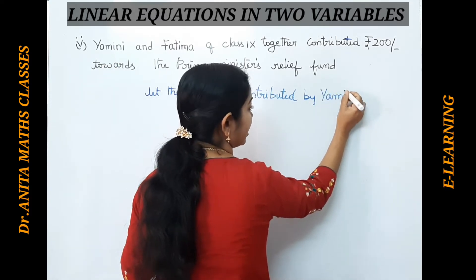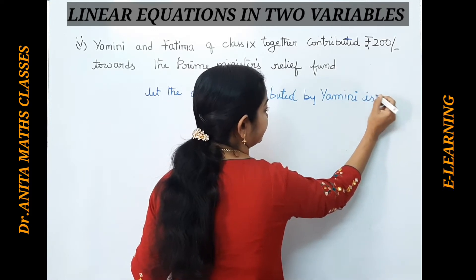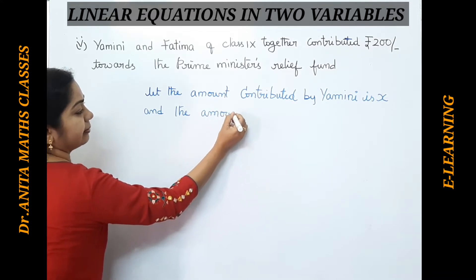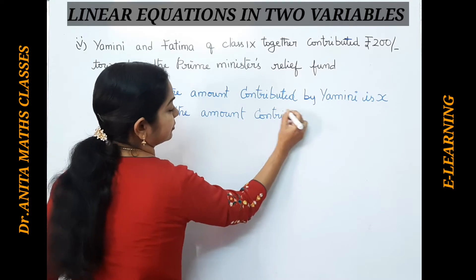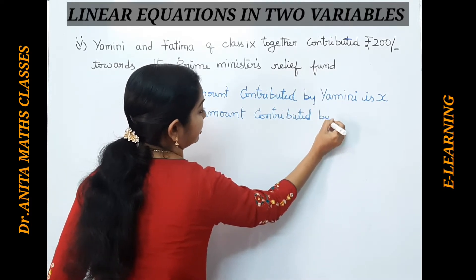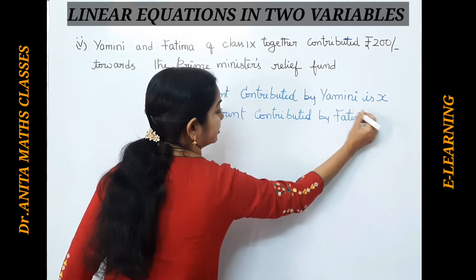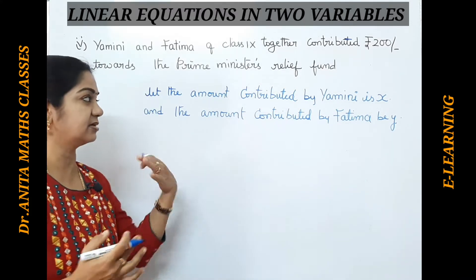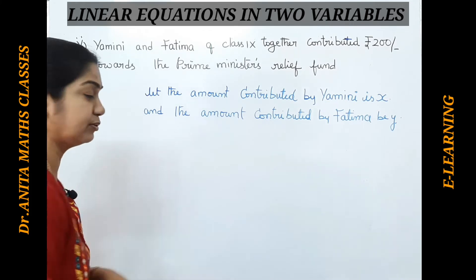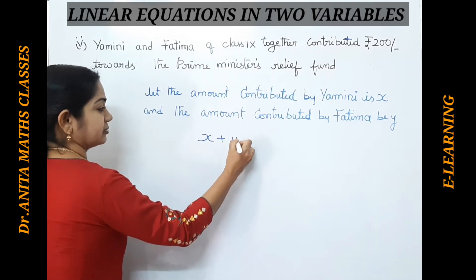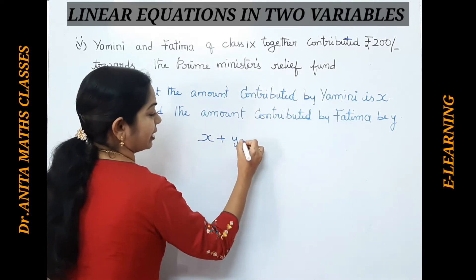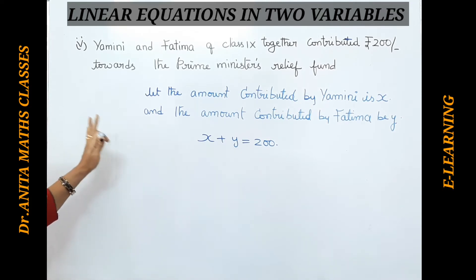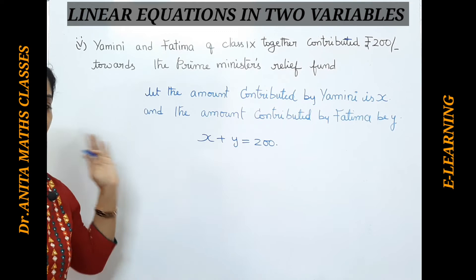Let the amount contributed by Yamini be X, and the amount contributed by Fatima be Y. Collectively they gave Rs. 200 to the Prime Minister's Relief Fund, so X + Y = 200. We just have to express it; we should not find out how much each gave. The question is to express it as a linear equation in two variables.